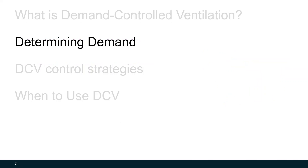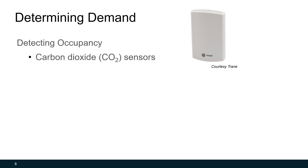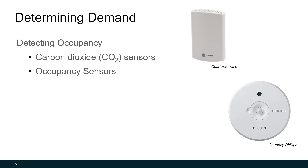The first step to implement demand-controlled ventilation is determining demand. To determine demand, we can use a number of sensors that detect occupancy. We can use carbon dioxide sensors or we can use occupancy sensors. Carbon dioxide sensors are most commonly used for DCV — they're analog sensors. Occupancy sensors are binary sensors; their limitation is they can only detect if a room is occupied, but they can't tell you how many people are in the room. Carbon dioxide sensors, by detecting CO2 which we all breathe out, can provide a rough estimate of the number of people in the space.